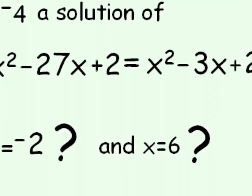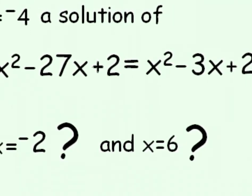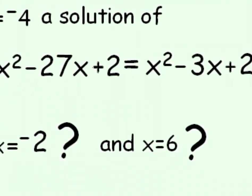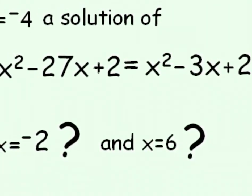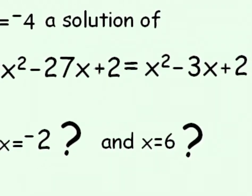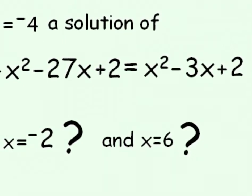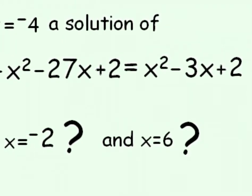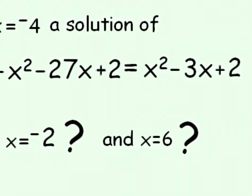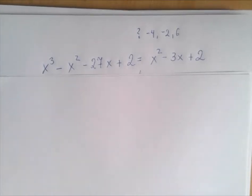So we're given an equation. This is a degree 3 equation, and we're not supposed to be able to solve these sort of equations yet, and we don't have to. Instead, this is really about checking. We are given three values for x: negative 4, negative 2, and 6, and we have to figure out about each one of them, whether they are a solution of this equation or not. So this is really six problems.